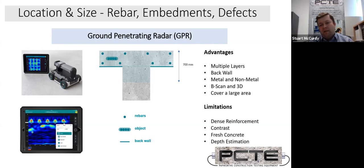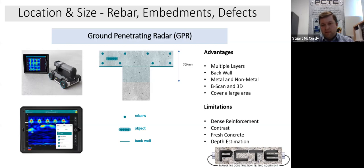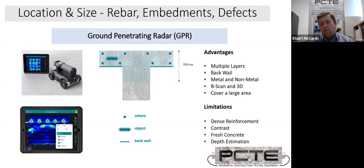The first case study is: how accurate is GPR? Location with GPR and cover meter, when you find steel, is accurate. Depth, on the other hand, with GPR is an estimate, but there are things we can do to improve on that estimate. The other case study is post-tensioning — I'm always getting asked how do I find post-tensioning and what would be the method to look for it.